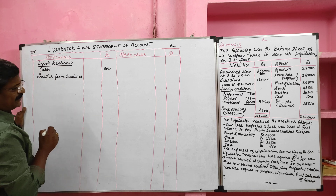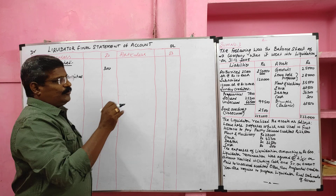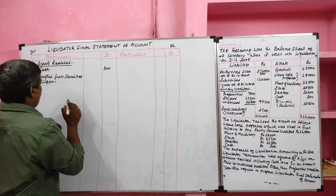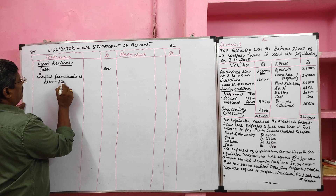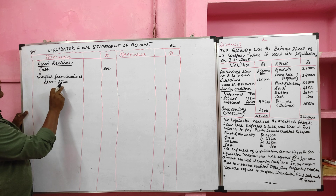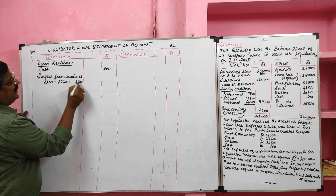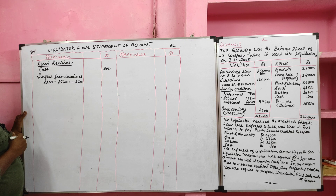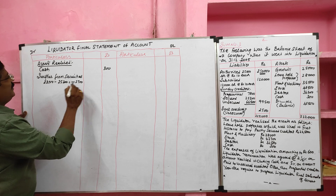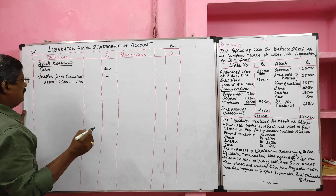Leasehold property realized value is rupees 22,500, but the secured creditor value is rupees 25,200. Since the leasehold property value is less than the secured creditor value, we are getting a deficiency. This deficiency should be included in the unsecured creditor amount. We need not record it on the debit side. Then we move to the other assets — plant and machinery.